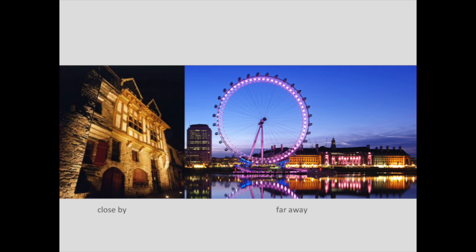We also have to think about the scale. Are we going to be close to what we're lighting, so the shadows and the texture that we create in a surface will be visible? Or is it something that we're going to be looking at from far away, where some of these subtleties — the small shadows that help give us a clue about the texture of a surface — just aren't going to be visible?